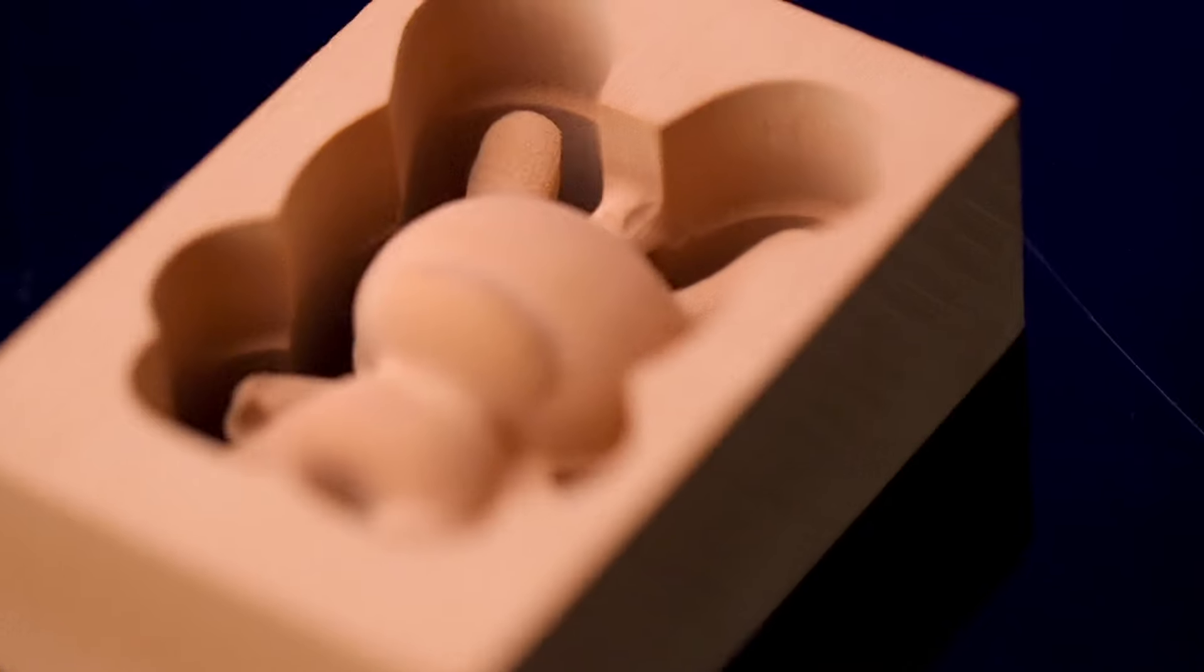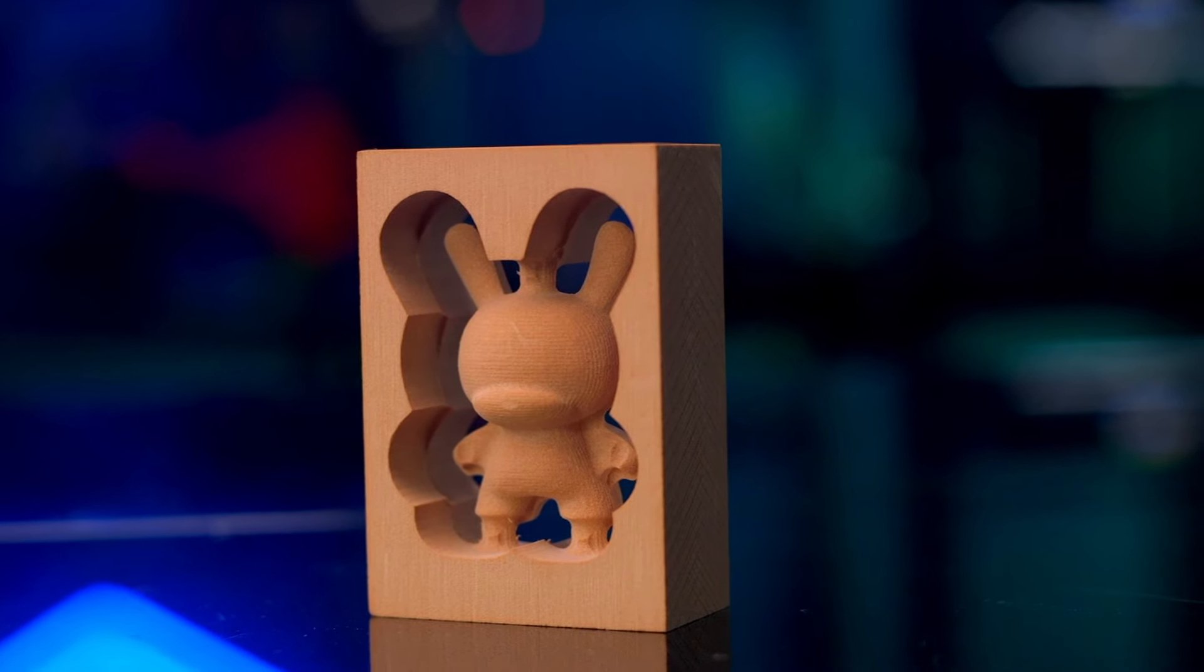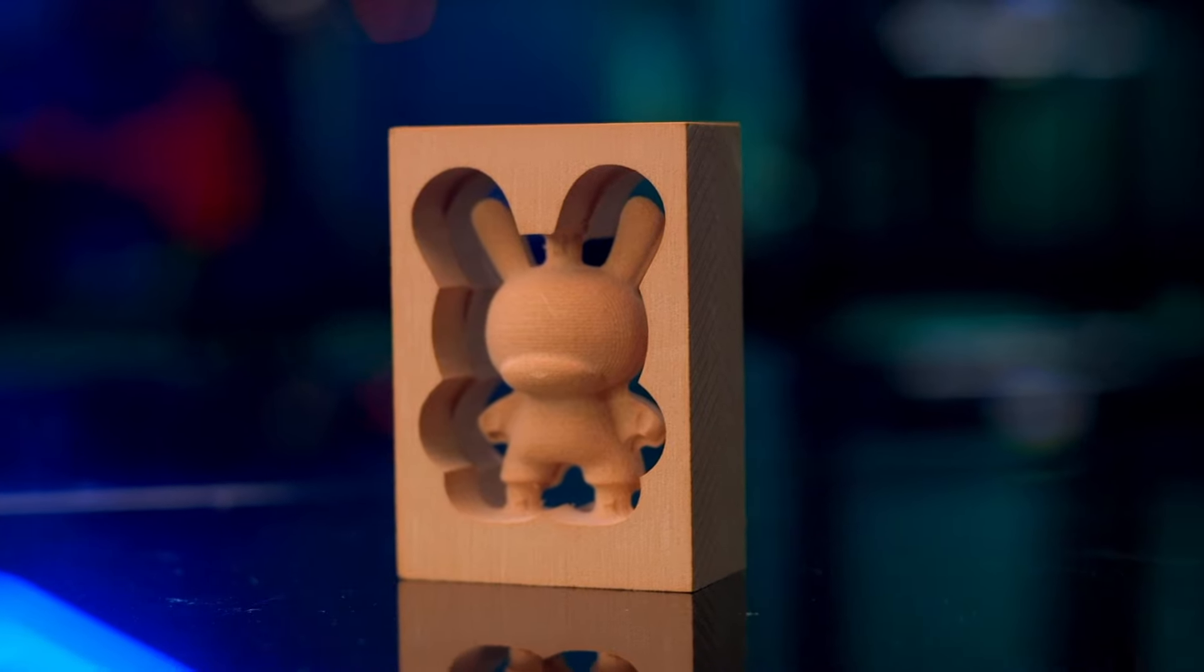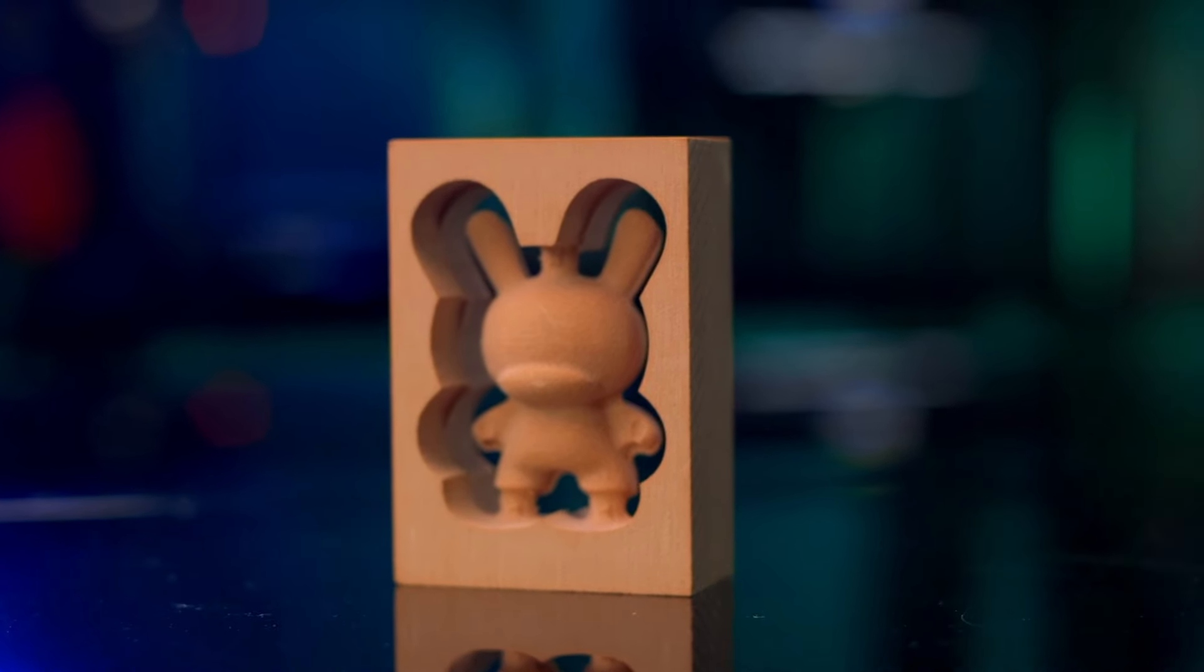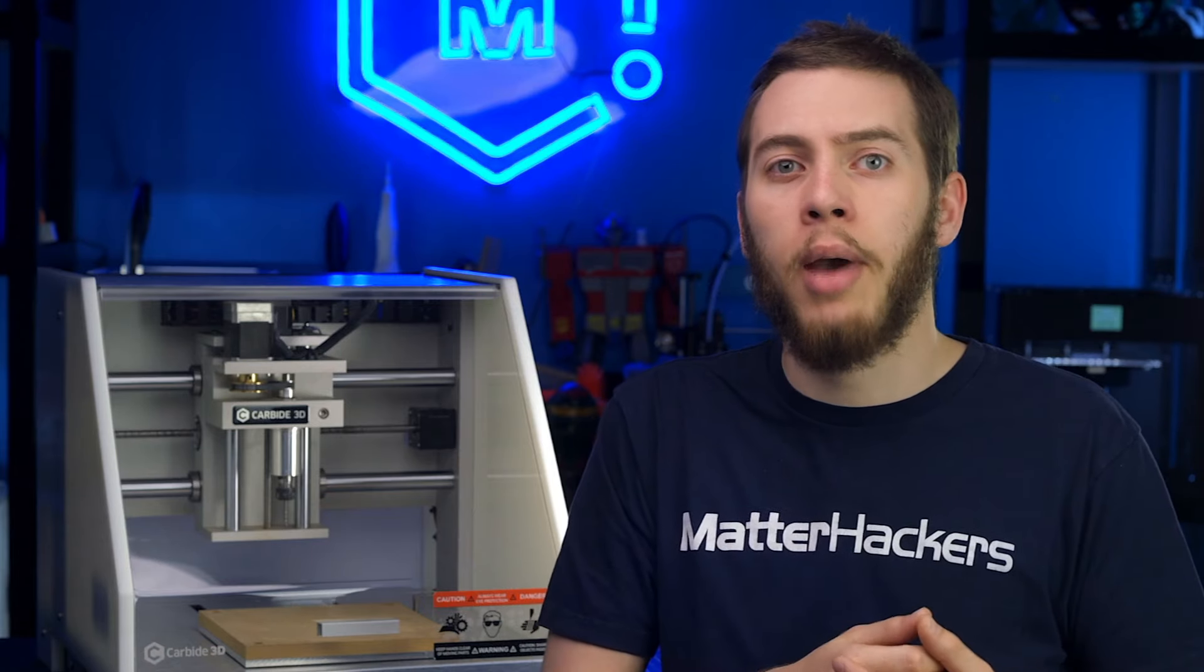And then you can carve your part in one side of the piece that it's holding, flip the whole thing over, and it has registration so that it isn't offset when you flip it over. Then you can carve the back side. So you're able to do fully 3D models that, as long as they don't have overhangs, it'll actually be able to carve them out, instead of having to have a flat back.